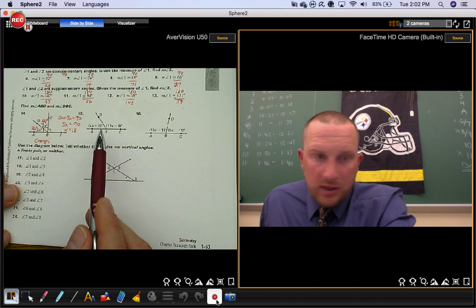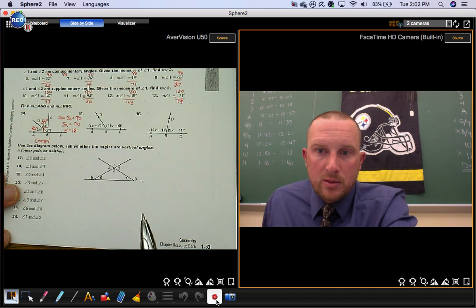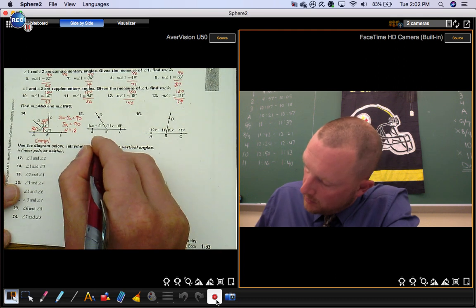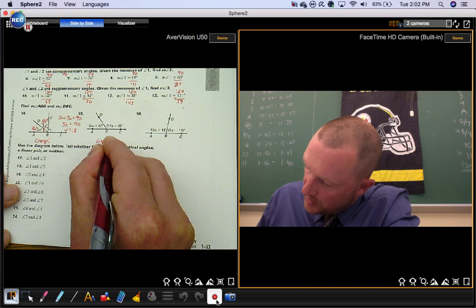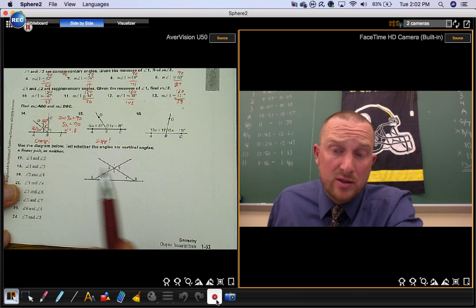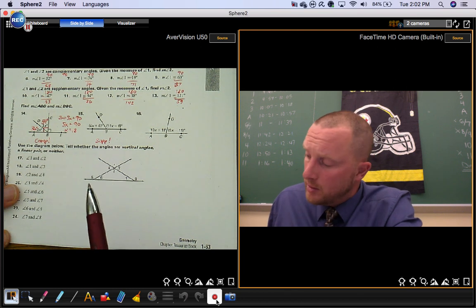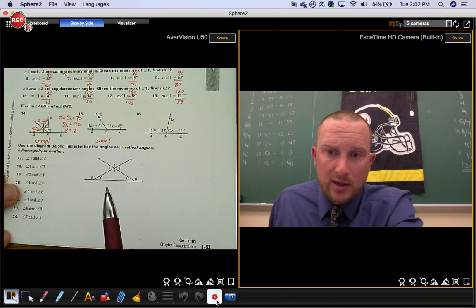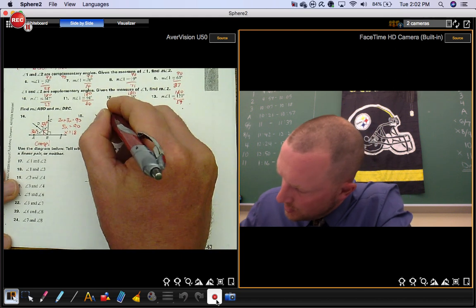So in number 15, look at these two angles here. What's their relationship? Well, they're supplementary angles and they're also adjacent. You could say they're a linear pair too. So together these angles must add up to 180. So here's the algebra.